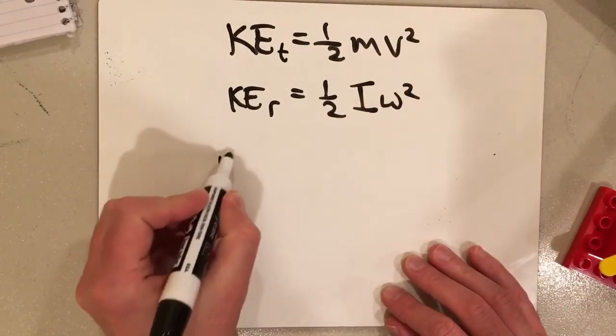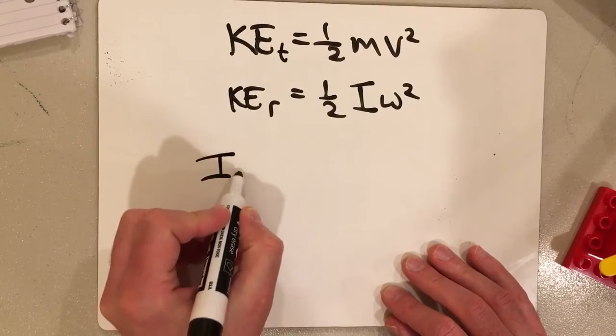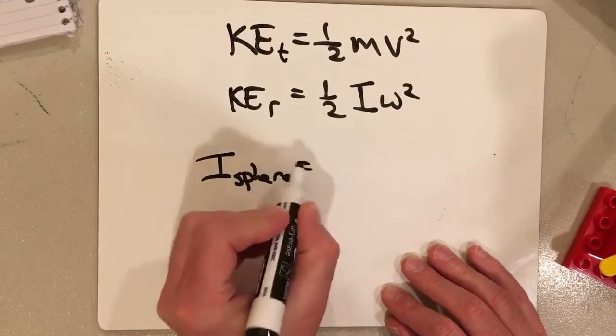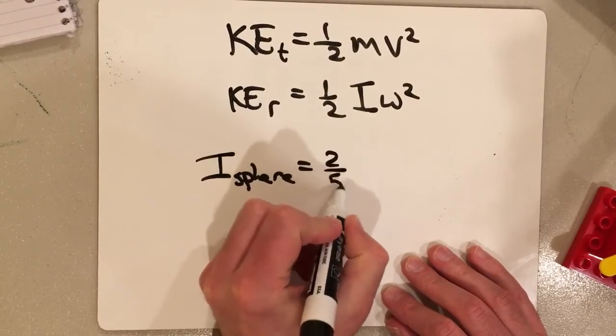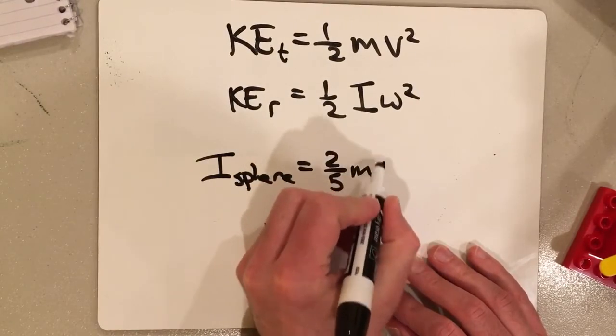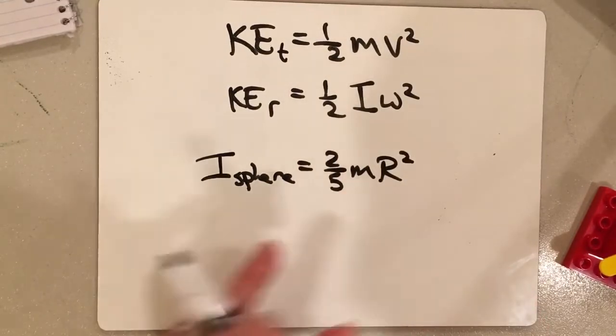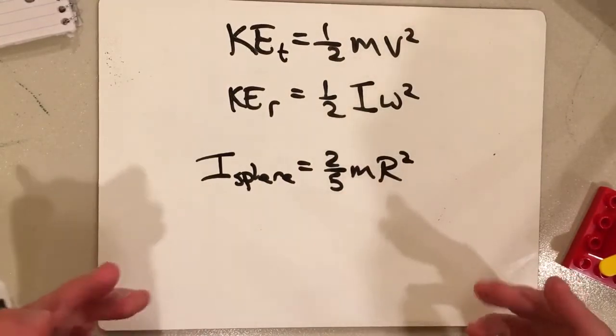But the reason I mention these shapes, these shapes are important because the formula for the moment of inertia is dependent on what the shape is. So for example, if you're talking about a solid sphere, for a solid sphere, the moment of inertia can be calculated by doing two-fifths m r squared. m being the mass of the sphere and r, of course, being the radius.